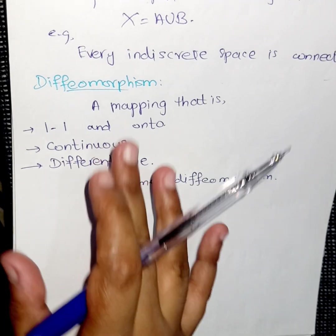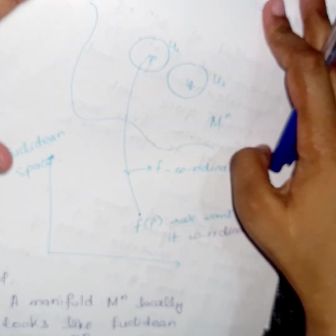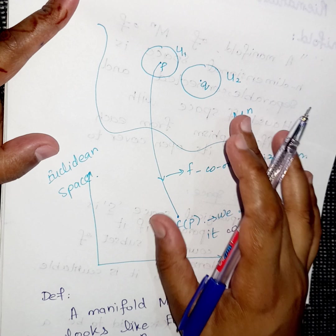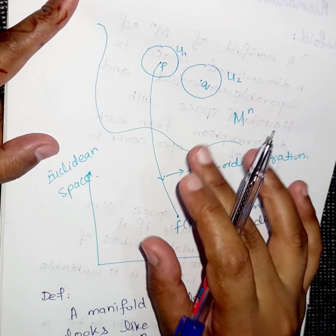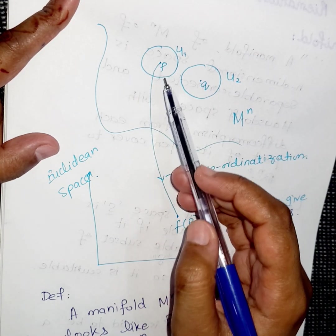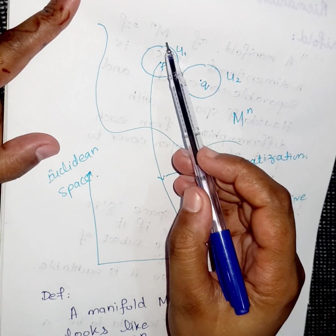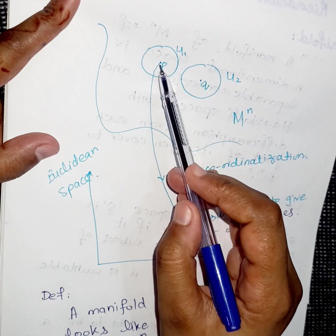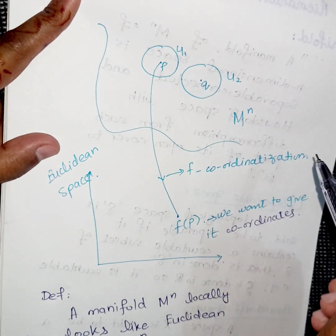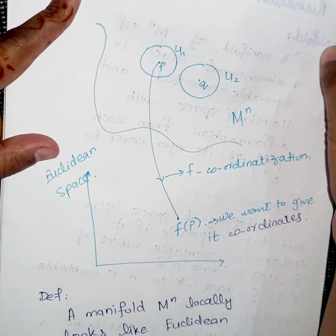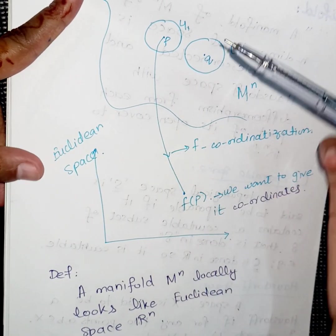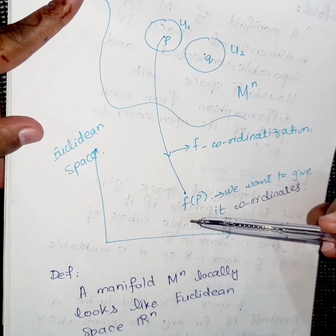Now let's come toward the definition of a manifold. In a manifold we have no coordinates, which is why we use definitions from topological spaces. We take open sets — say U₁ and U₂ — with points p and q. Since it is a Hausdorff space, U₁ intersection U₂ equals the empty set. This manifold is denoted Mⁿ, and we now map it to a Euclidean space Rⁿ.